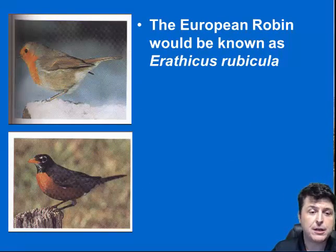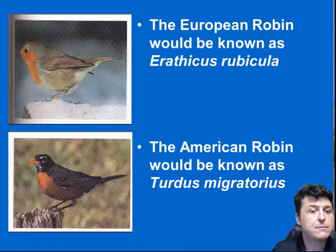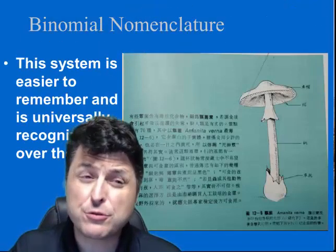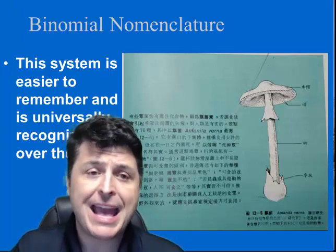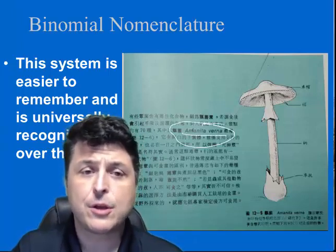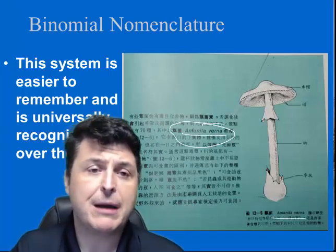When we go back to our birds, the European robin would be Erithacus rubecula and our American robin would be Turdus migratorius. The system is truly universal, recognized all around the world. Here we have a textbook excerpt from China, and right in the middle of these Chinese characters we see the scientific name for a mushroom, Amanita. Classification allows us to more easily study things, and with our modern system, when two things are grouped close together, we know they share common ancestors, common structures, and common DNA — making it much easier to study, no matter where you are in the world.